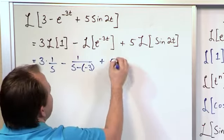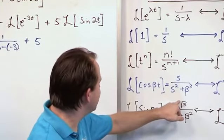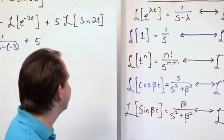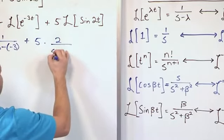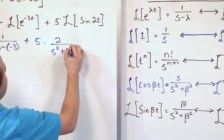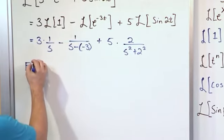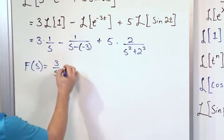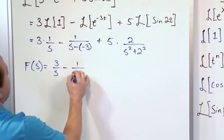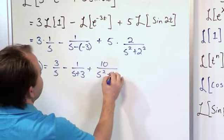Then we have 5 times Laplace of sine of 2t which is 2 over s squared plus 2 squared. I know that you know that 2 squared is 4, but you don't want to do too many things at one time. So the answer is going to be f of s equals 3 over s minus 1 over s plus 3 plus 10 over s squared plus 4.